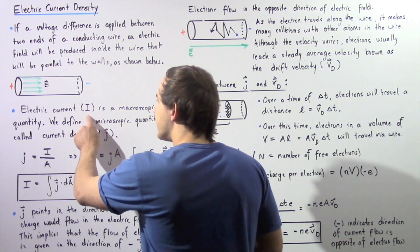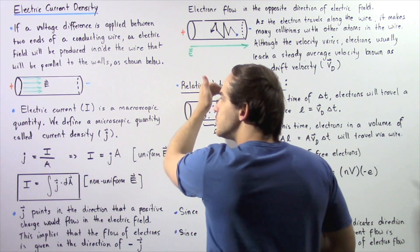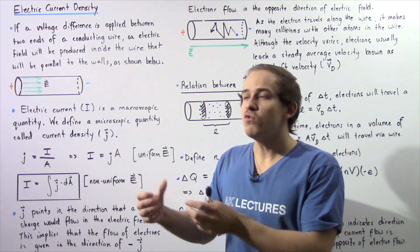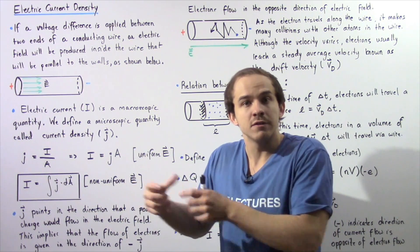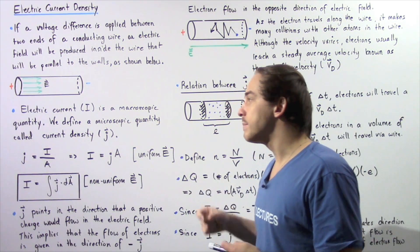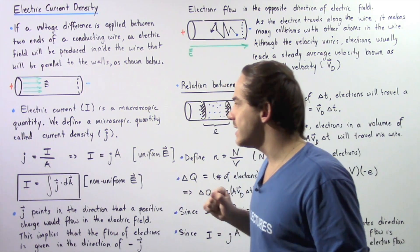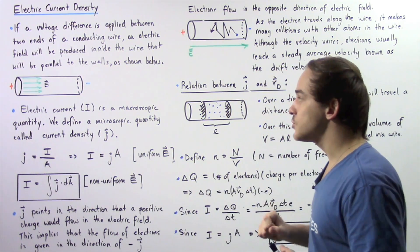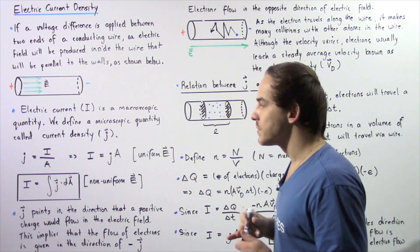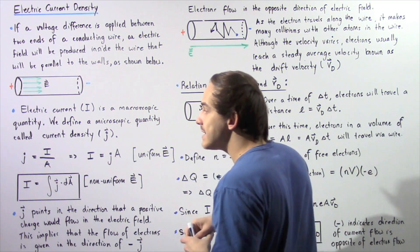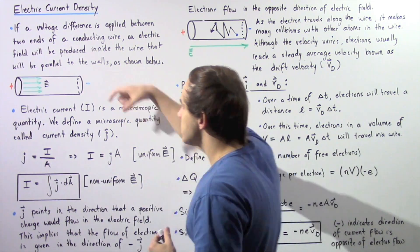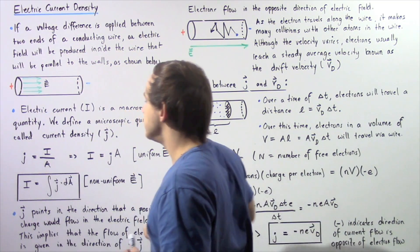Electric current, defined by I, travels in the direction of the electric field and is a macroscopic quantity. By macroscopic we simply mean it describes the movement of many electrons — a chunk of electrons — over some given unit of time. We now define a microscopic quantity called the current density, given by lowercase j, which essentially describes the movement of a single electron within a conducting wire. Current density j is defined as the quantity of electric charge I per unit area, where the unit area is simply the cross-sectional area of our conducting wire.